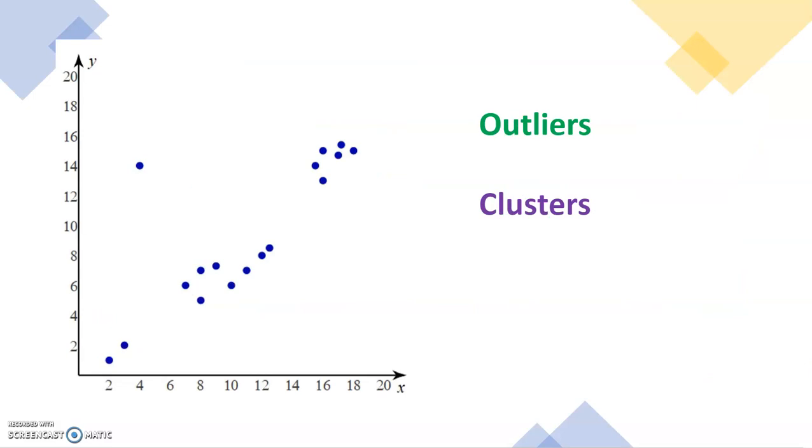First we're going to see if we can fit a line to the data to see if there is a relationship, whether that be a straight line or a curve. Now I can see that if I go through the middle there, the data can be modeled by a linear relationship.